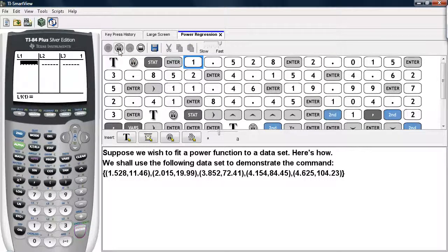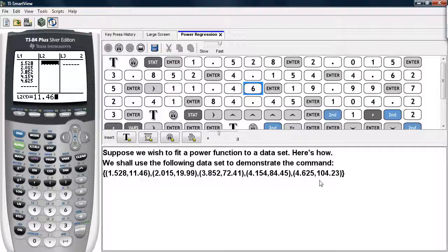So we hit STAT. We go ahead and enter in these data values under the EDIT menu, and the first number in each one of these ordered pairs are the X coordinates. They will be listed in L1, and the second number in each one of these ordered pairs are the Y coordinates and they will be listed under L2.